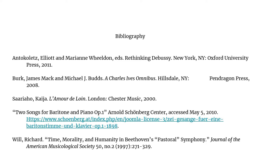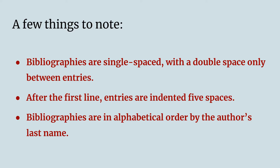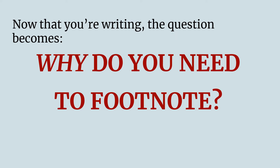Your bibliography should look like this. Here is a good example of the way a bibliography should be formatted. There are a whole bunch of things that you really should be aware of. Number one, bibliographies are single spaced with a double space only between entries. In the second line of a bibliography, entries are indented five spaces. And bibliographies are in alphabetical order by the author's last name.